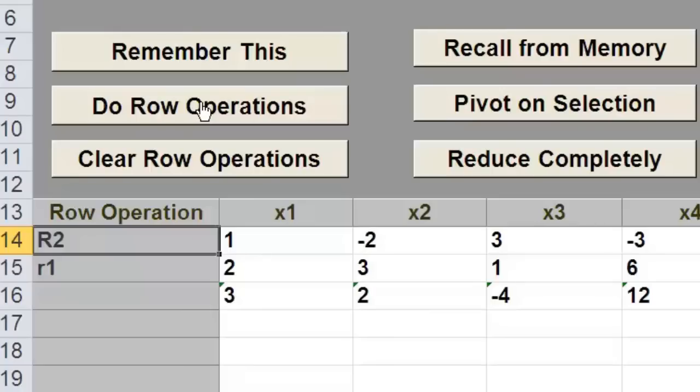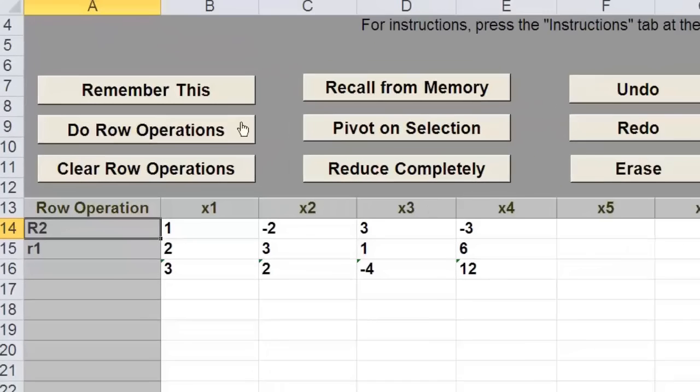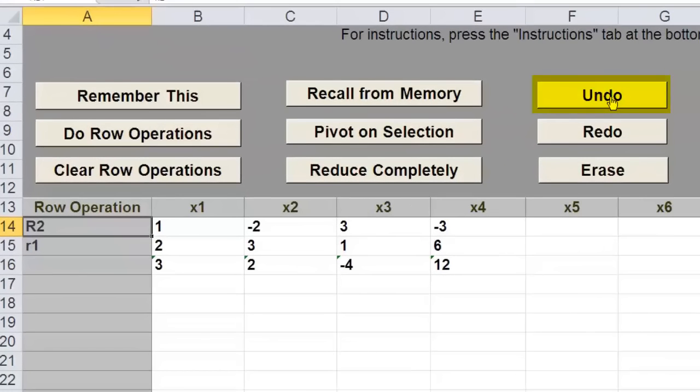If, for example, you entered the row operations by mistake or it wasn't what you wanted to do, there is a button in the upper right titled undo. If you click that button, it will reverse, it will undo the row operations that you have entered into that row operations column. Well, let's do that row operation again.